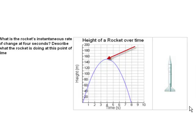Here we were given the graph of a rocket's height with time, and the question we were asked was, what is the rocket's instantaneous rate of change at 4 seconds? Describe what the rocket's doing at that point in time.